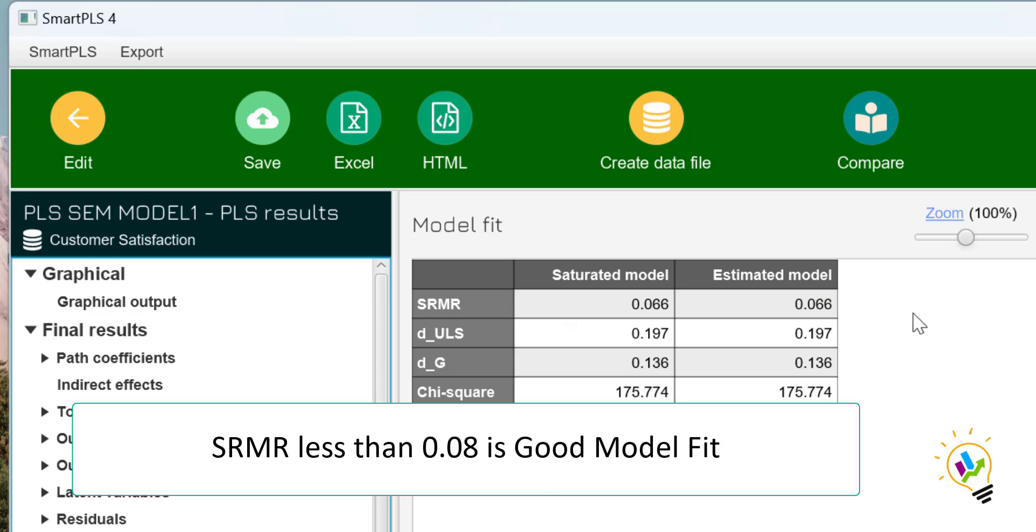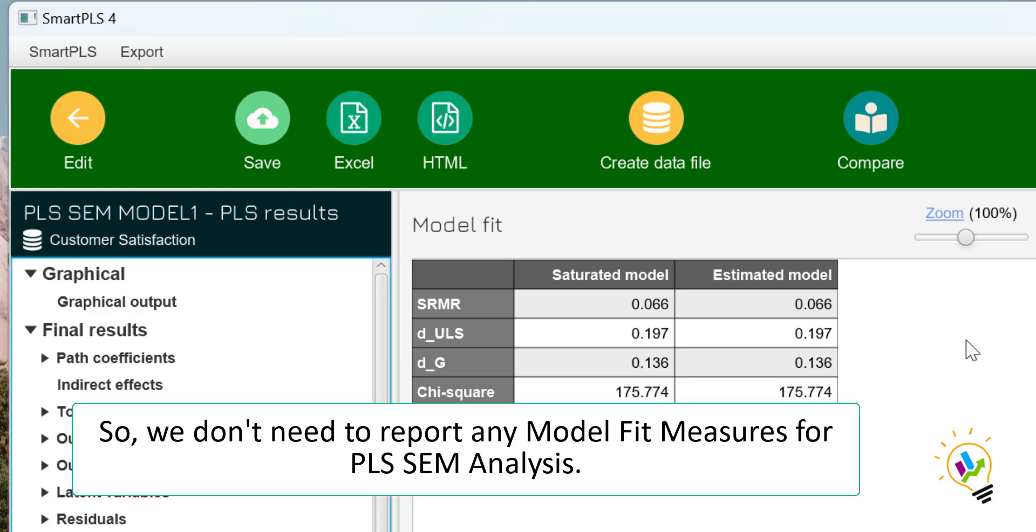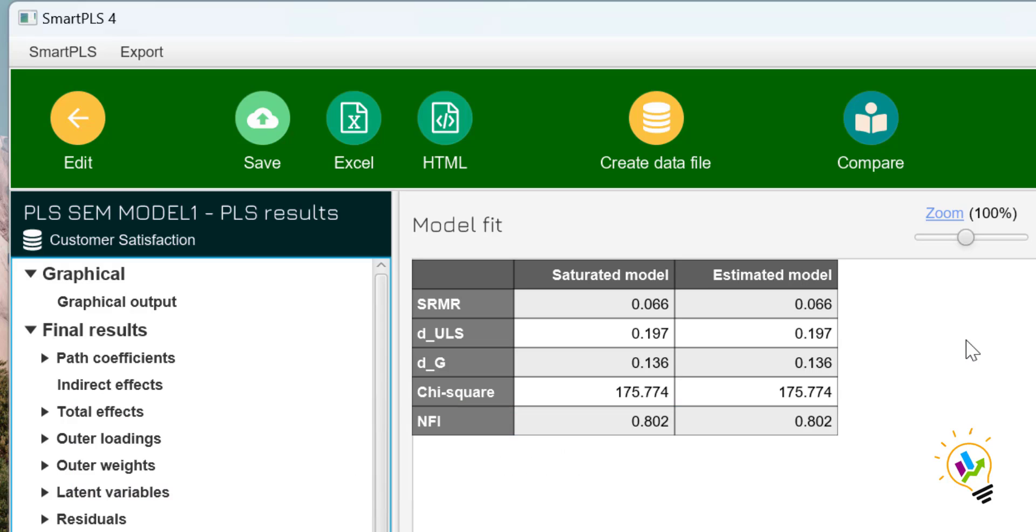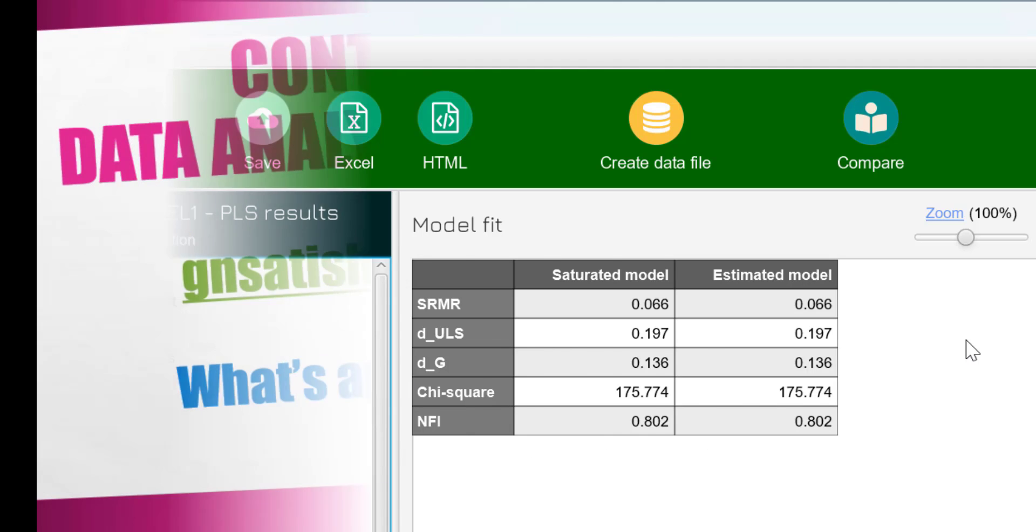In this case, we got 0.066, which is less than 0.08. But we don't need to specify or give any sort of model fit in the interpretation part.